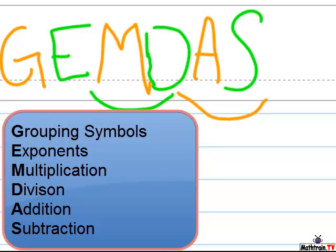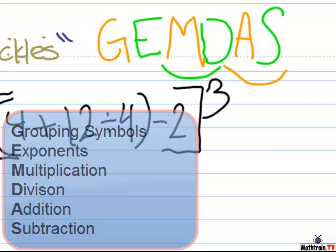G in GEMDAS means grouping symbols. The E in GEMDAS means exponents. The M means multiplication and the D means division. And the A means addition and the S means subtraction.